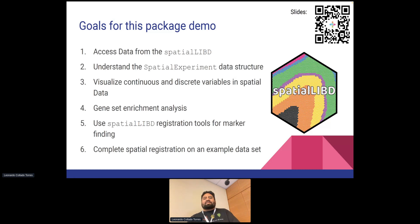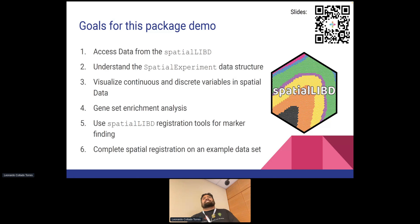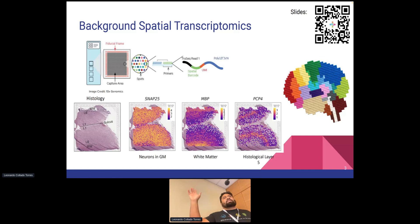We wanted to do a live demo, and the package is tested on GitHub Actions and Bioconductor, but I ran some code here today and it doesn't work. It's related to the curl package from CRAN having changed. No errors have been reported elsewhere, so we'll show you some websites where we have output already pre-compiled, as well as some code involving files I have on my laptop.